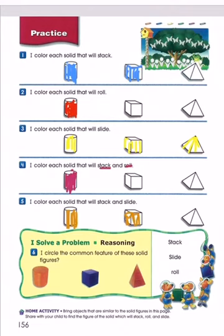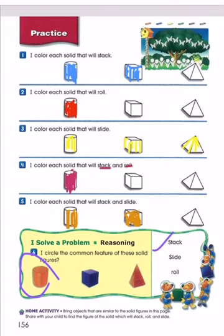Number six is a solve problem. I circle the common feature of the solid figures. Among these three shapes, which one can stack, slide, and roll? Of course, the cylinder — it can stack, slide, and roll. So we circle the cylinder. That is all for today's lesson. Thank you for listening and watching.